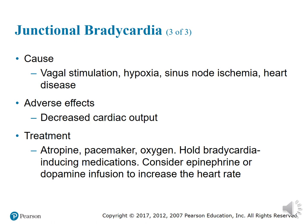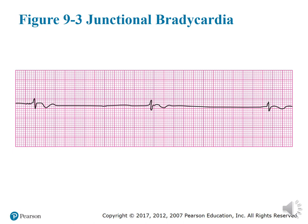Looking at the junctional bradycardia strip, the rhythm is very slow. You can see an attempt at a PQRS complex that didn't fully complete, and some tremor artifact in the baseline. This example has no visible P waves, so there is no PR interval to solve for. This concludes today's lecture — if you have questions, leave a message and we'll go over it again.